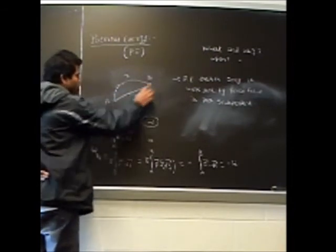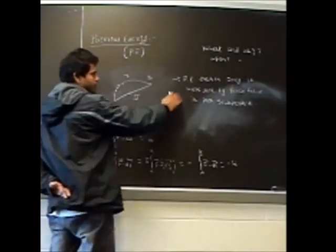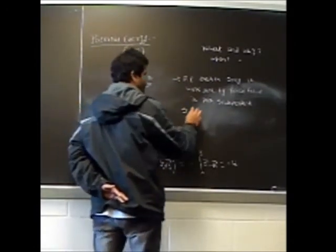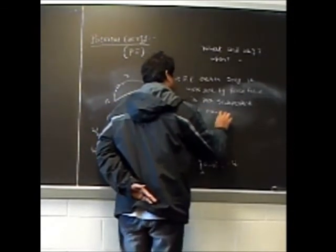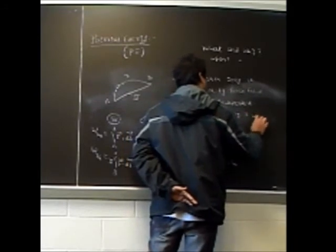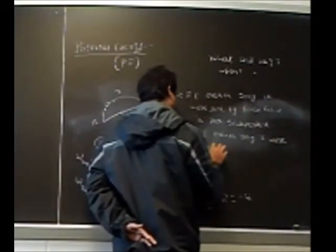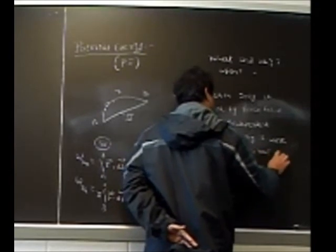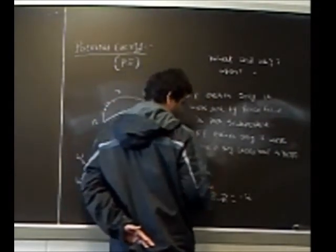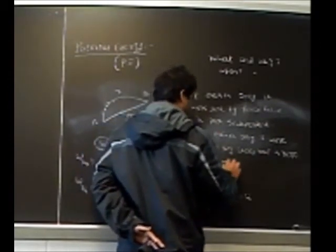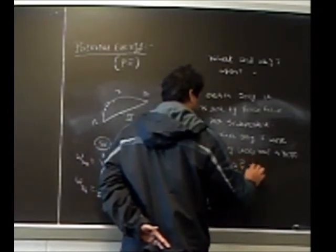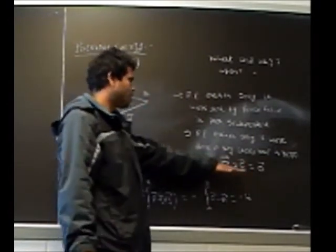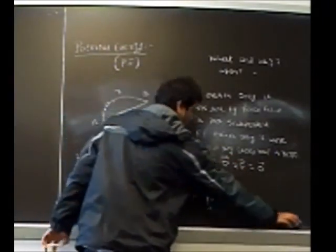Therefore, work done in a closed loop is zero. So potential energy exists only if work done by the force field is path independent, which is equivalent to saying work done in any closed loop is zero. In higher mathematics and physics, this condition is expressed as del cross F equals the null vector, where F is the force field and del cross is the curl operator.